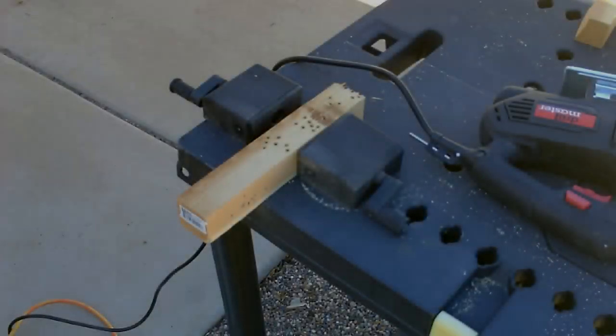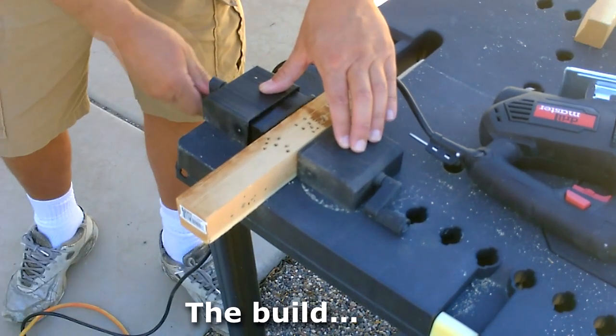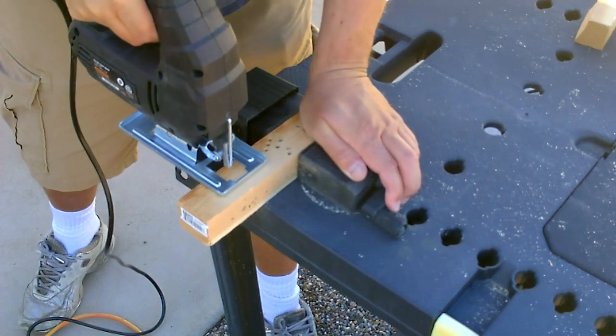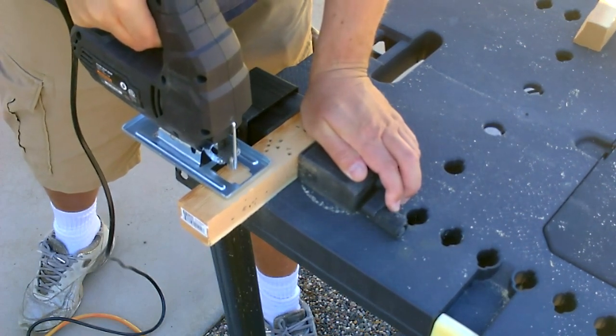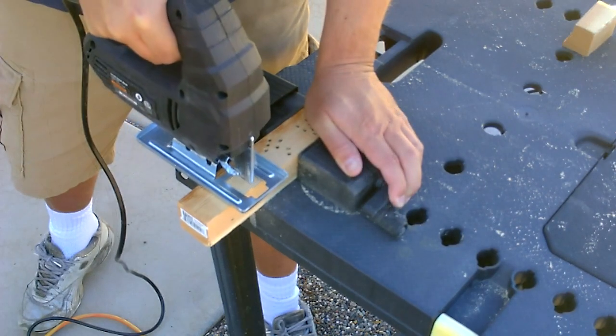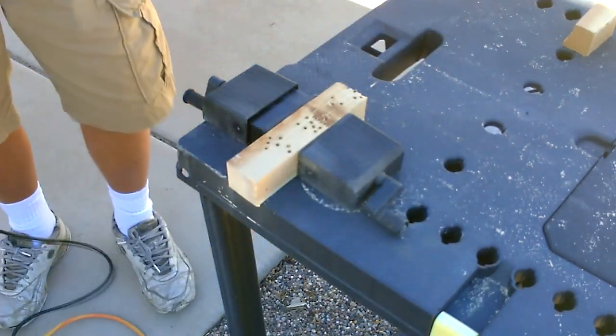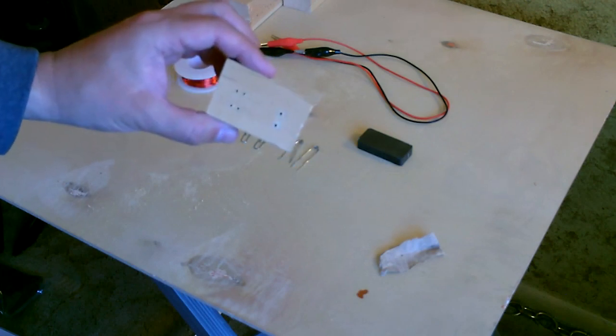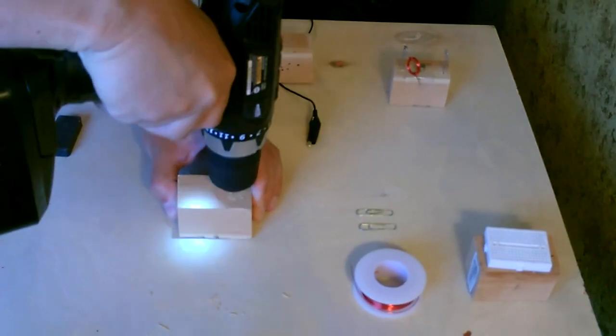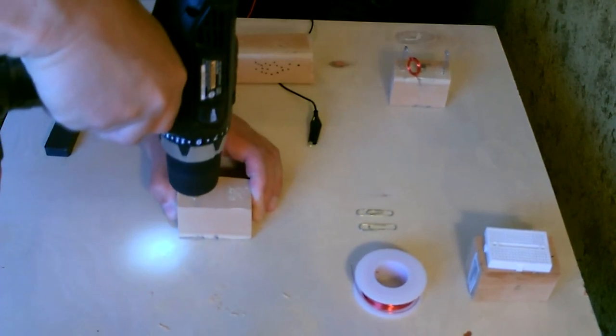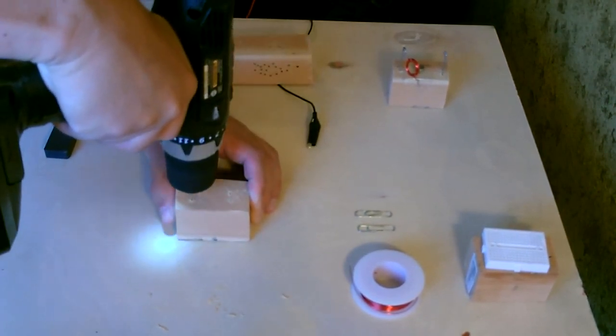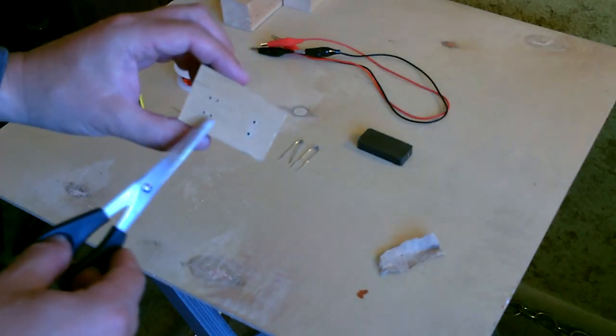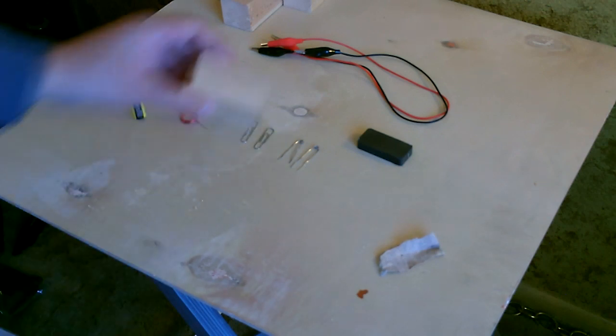So first, just drill the little holes in a small block of wood. I used a 1/16 inch drill bit for those. Works good with a standard size paper clip.